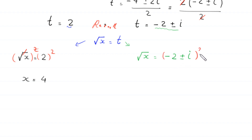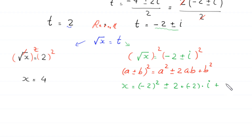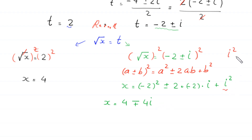Squaring both sides, the square cancels the square root, and we use the identity (a plus or minus b) squared equals a squared plus or minus 2ab plus b squared. So (negative 2 plus or minus i) squared equals negative 2 squared, plus or minus 2 times negative 2 times i, plus i squared, which equals 4 plus or minus negative 4i, plus i squared. Since i squared equals negative 1, we replace it: 4 minus 1, plus or minus 4i, giving 3 plus or minus 4i.